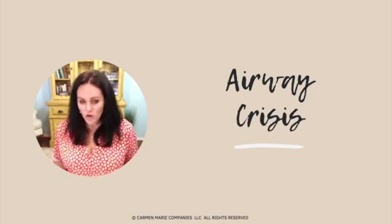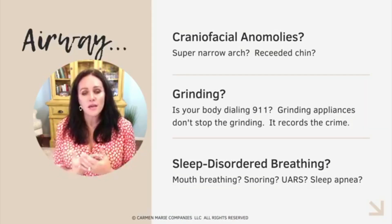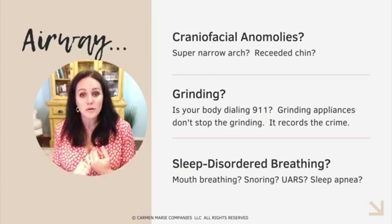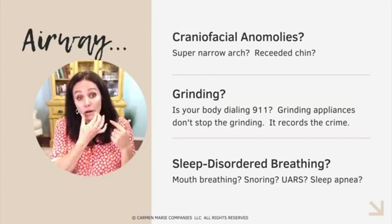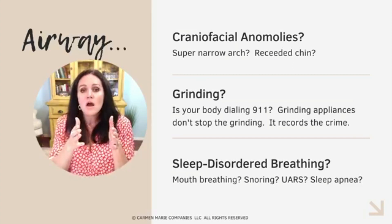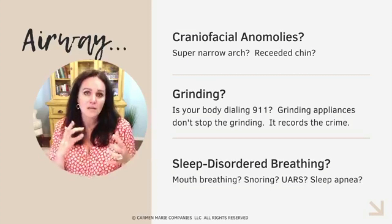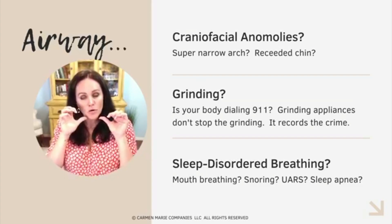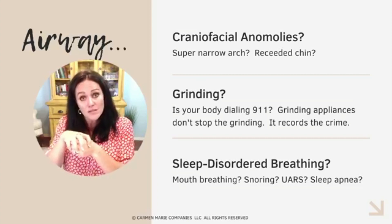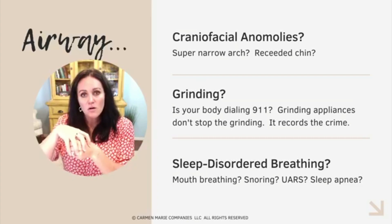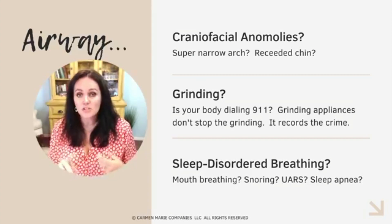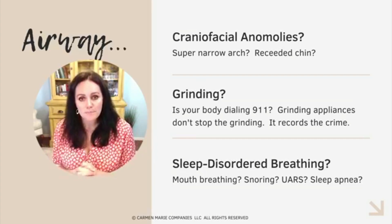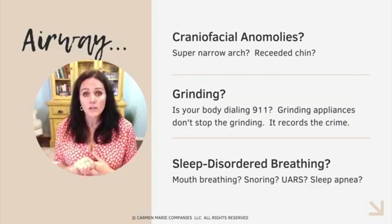First let's talk about airway crisis. Think about whether you have craniofacial anomalies. The first priority is airway. Do you have a super narrow arch? If your arch is high and narrow, the face did not develop correctly. The maxilla needs to be strong and forward, and then the mandible will follow — like a lid on a box. When the mandible grows forward it takes the airway, soft tissues, and tongue with it, so we don't end up with obstruction.